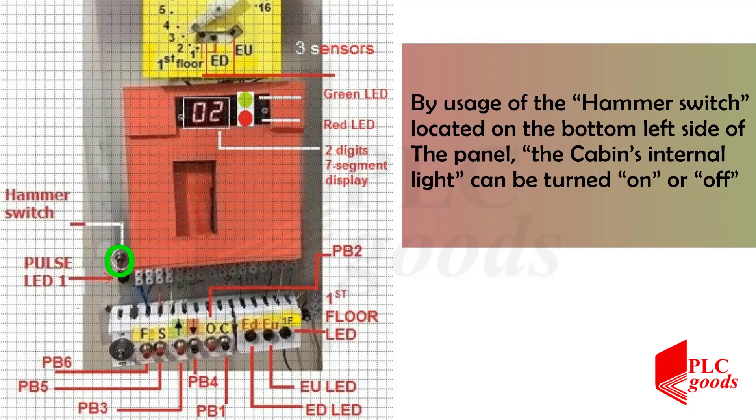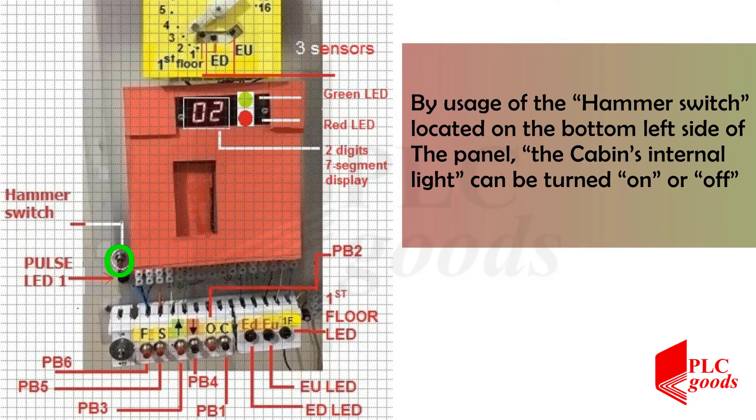By using the hammer switch located on the bottom left side of the panel, the cabin's internal light can be turned on or off.